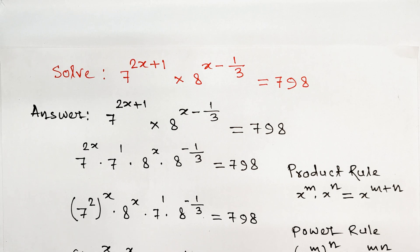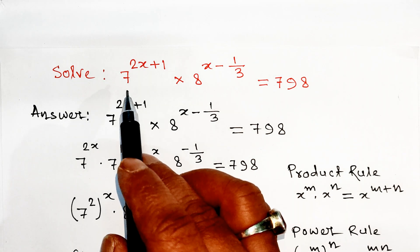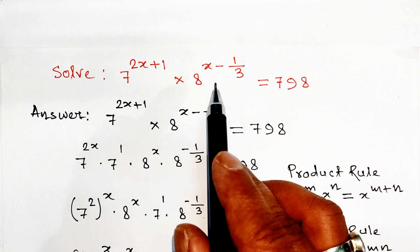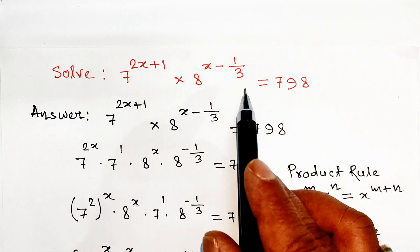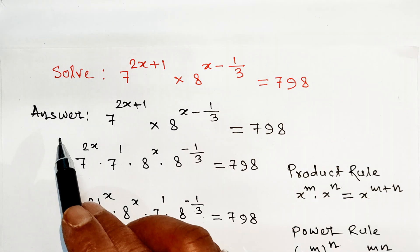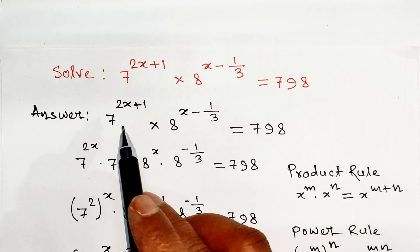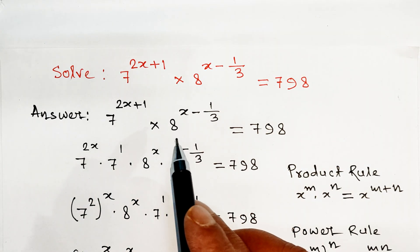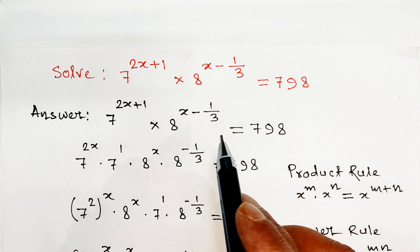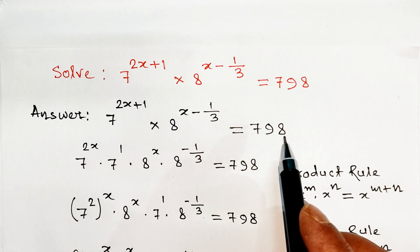Welcome to I Am Math. In this video we are going to solve this given exponential equation: 7 to the power 2x plus 1, into 8 to the power x minus 1 divided by 3, equals 7.98.